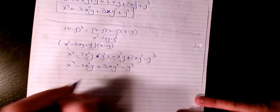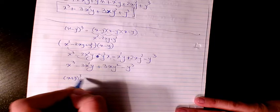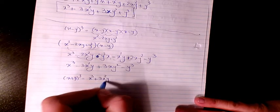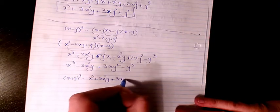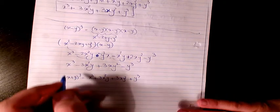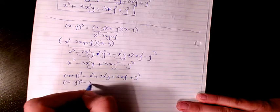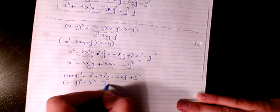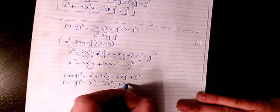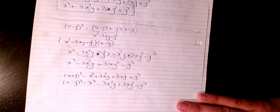So in total: (x + y)³ = x³ + 3x²y + 3xy² + y³, and (x - y)³ = x³ - 3x²y + 3xy² - y³.